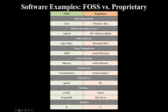Here's a chart showing some examples of FOSS versus proprietary software. Starting with operating systems: on the proprietary side, Windows and Mac; on the FOSS side, Linux. With mobile operating systems, Apple and Windows Mobile are proprietary, while Android is FOSS. For office software, Microsoft Office is proprietary, while OpenOffice is on the FOSS side. These days, there are FOSS alternatives to almost every type of proprietary software, including software for image manipulation, vector drawing, and web browsers.